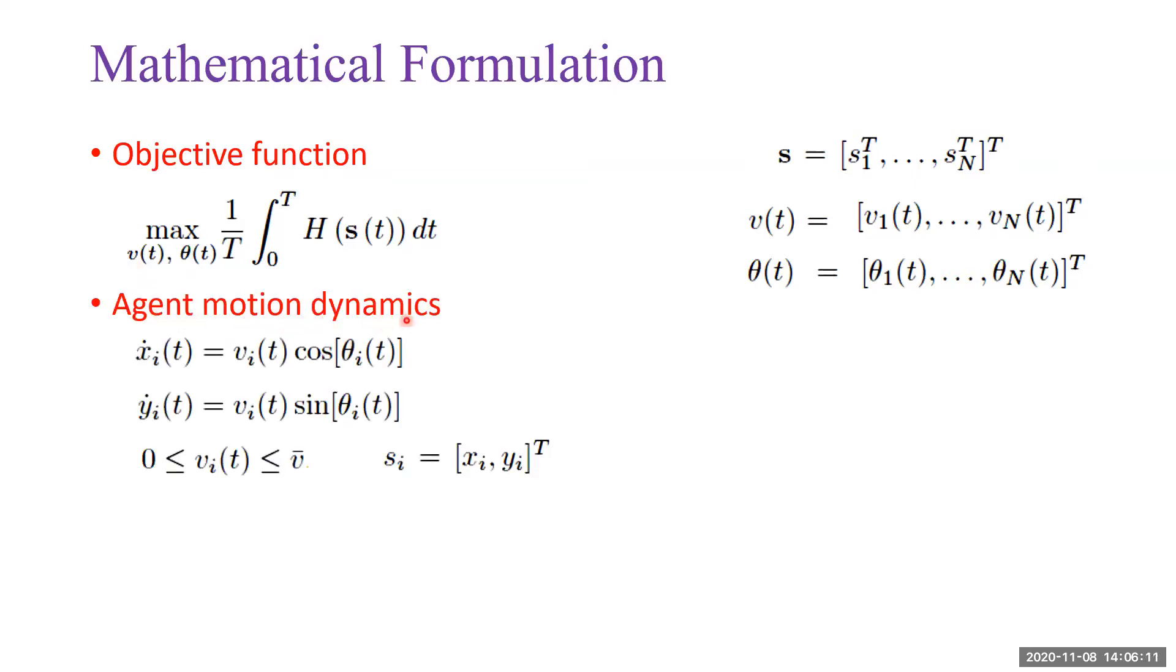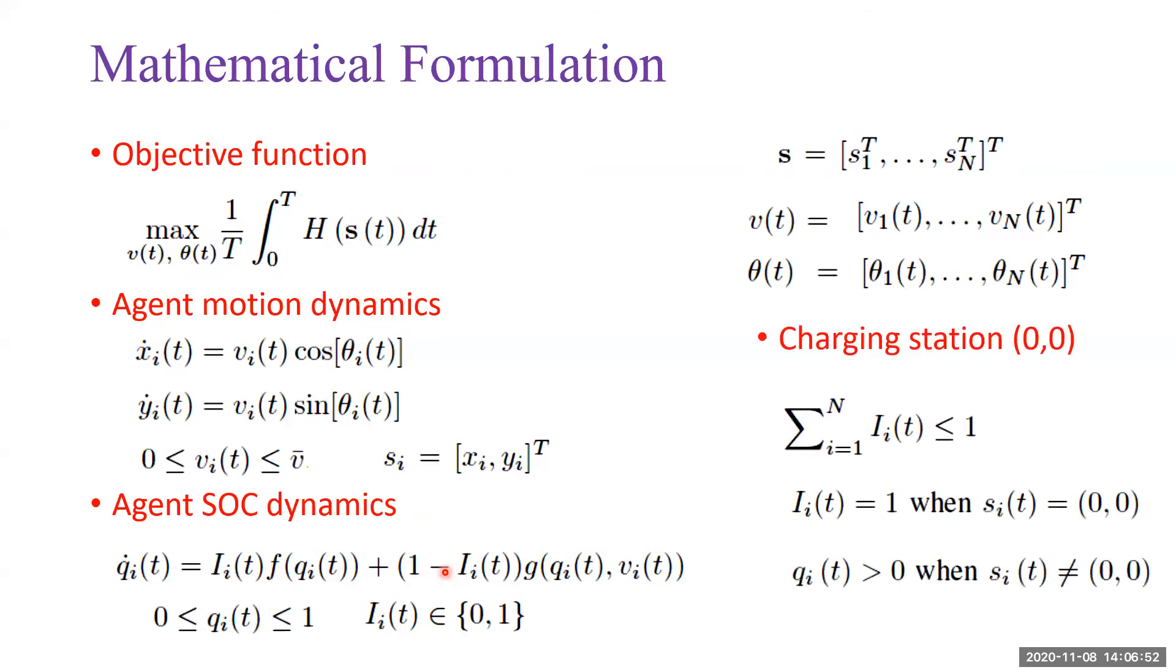Here we show the motion dynamics of the agent. We assume there is an upper bound for the speed. Here is the SOC dynamics. i_i(t) is a binary variable. When i_i(t) is 1, it means the agent is in the in-charging mode. When i_i(t) is 0, the agent is in the energy depletion mode. We assume the coordinate of the charging station is (0,0).